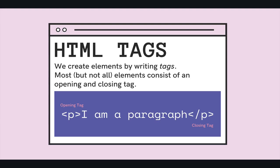To actually use an element or write HTML in a document, we write what are called tags. An element consists usually of an opening and closing tag. For a paragraph element, we have the opening tag and a closing tag — angle brackets around the tag name P, and then the same thing on the right with a forward slash to indicate we're ending the paragraph. This tells the browser: this is a paragraph starting here and stopping here. We will see a couple elements that do not have an opening and closing tag, but most of them do.